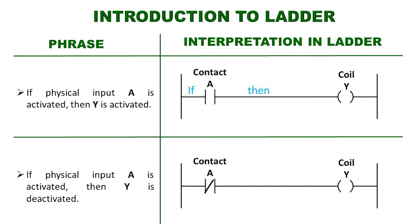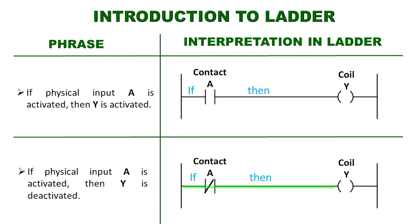Another sentence might say: if physical input A turns on, then Y turns off. This could be represented on the ladder diagram with a normally closed contact A and a Y coil, and would be interpreted as follows: if contact A receives a logical one, then this contact changes state — that is, it opens — and thus can deactivate coil Y, since it was initially activated because contact A is normally closed. To reactivate the Y coil, it would only be enough to deactivate the physical input, thus contact A would return to its default state, which is normally closed.